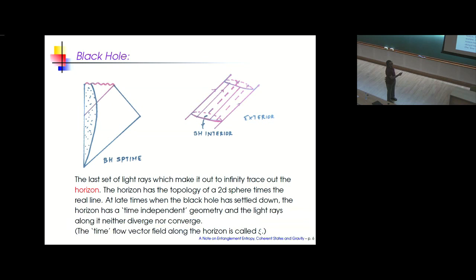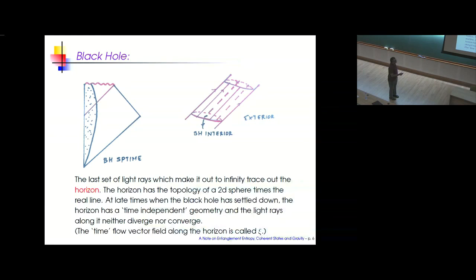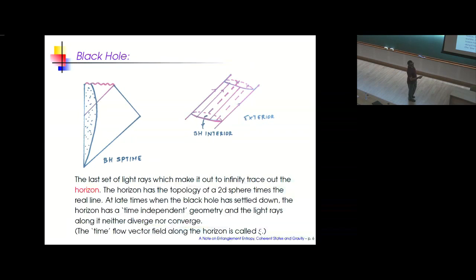The last set of light rays which just about make it to infinity form a three-dimensional set called the horizon of the black hole — a two-sphere crossed with the real line. Once all the matter has fallen into the singularity, the external geometry stabilizes and the geometry of the horizon becomes time-independent. Blown up at late times, the light rays moving along the horizon neither converge nor diverge — they have constant geometry, like a collimated beam. The black hole interior is inside; the exterior is outside. For experts: the time flow vector field along the horizon is denoted by psi, the Killing vector parallel to the horizon.